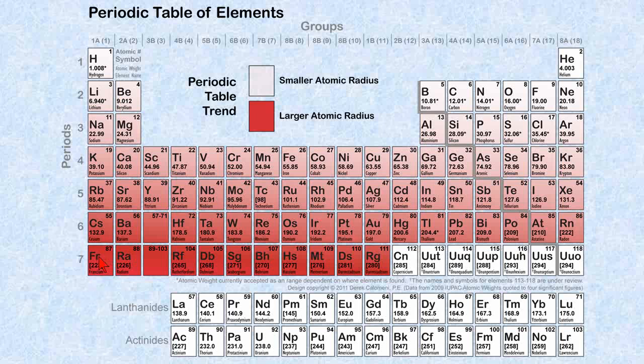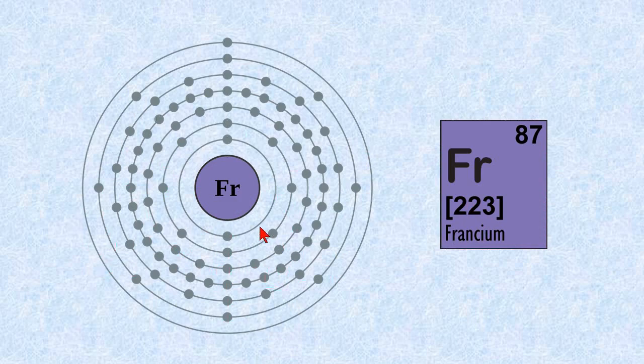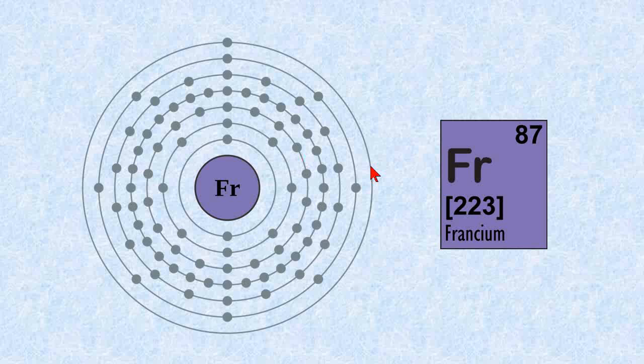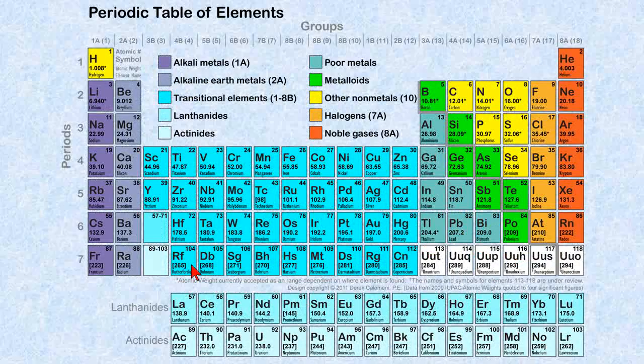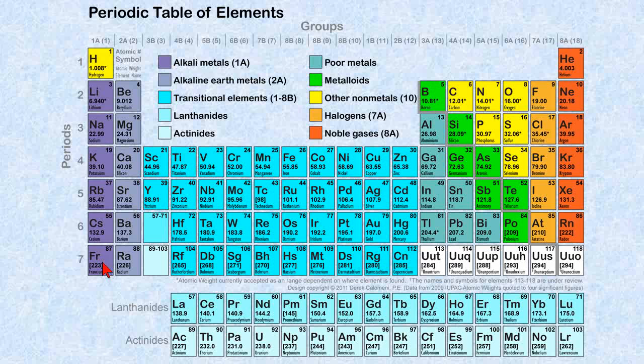So let's look at francium. It does look like a very big atom and you see 87 electrons around it and the atomic radius is from the center of the nucleus to the outer shell. So it's not hard to see that this is large, but how does it compare with lithium and sodium here? Let's take a look.